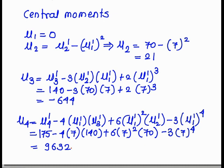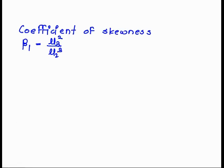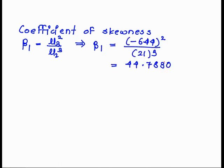Now we calculate beta 1 and beta 2. The coefficient of skewness beta 1 is equal to mu 3 squared upon mu 2 cubed. Substituting the values of mu 3 and mu 2, we get beta 1 is equal to 44.7830.